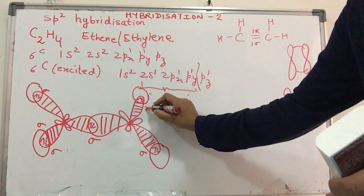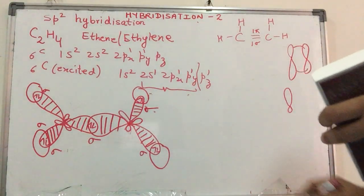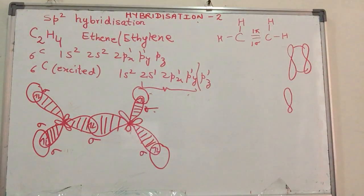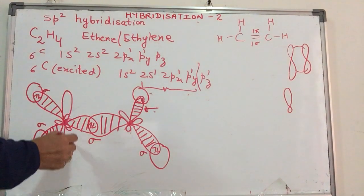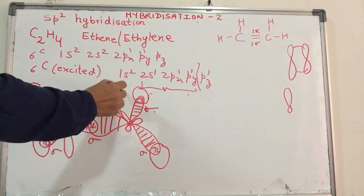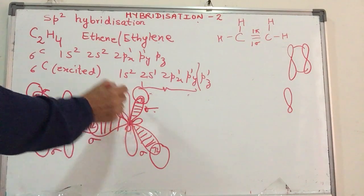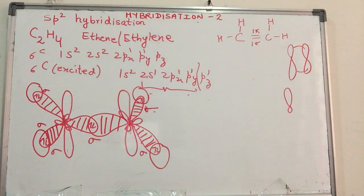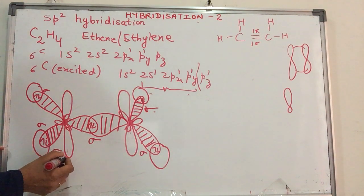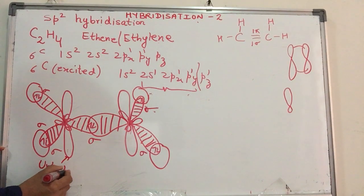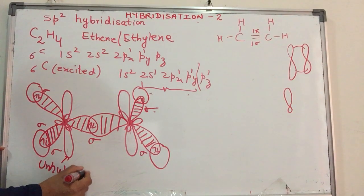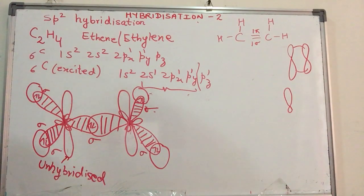If you notice, there is still one p orbital which has got an unpaired electron. So this is my sigma bond here. Now in each of the carbon atoms, there is one p orbital which is unhybridized. To differentiate between the unhybridized and the hybrid orbitals, I am not going to shade the unhybridized ones. So there is no confusion. So this is unhybridized.